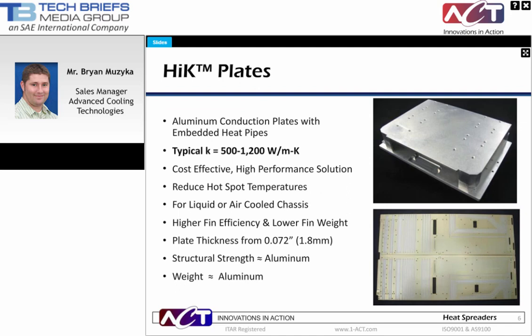High-K plates are plates with embedded heat pipes. Heat pipes are pressed into grooves or drilled holes and soldered or epoxied into place. High-K plates offer similar strength and weight as aluminum with much higher thermal conductivities. They can be manufactured as thin as 0.072 inches, and high-K plates are often used to reduce hot spot temperatures or increase fin efficiencies for air-cooled heat sinks. The thermal conductivity range is from 500 to 1200 watts per meter K. These values come from real-world applications, where we adjusted the bulk thermal conductivity of the plate in models until the hotspots matched tested results. The range is mainly dependent on geometries, as large form factors can achieve higher effective conductivities, since the delta T across the heat pipe is not a function of length.